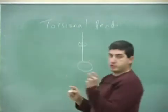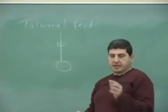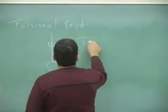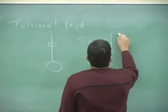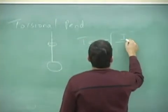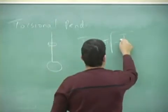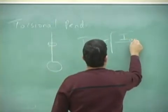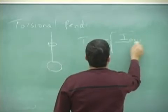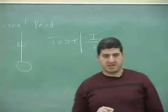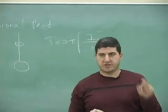Remember, this is the one that we twist the spring. And then we let go of it, and it goes back and forth. This one, the formula is t equals 2π square root of the moment of inertia of the object about the axis of rotation divided by the kappa. Kappa is known as the torsional constant of the string.